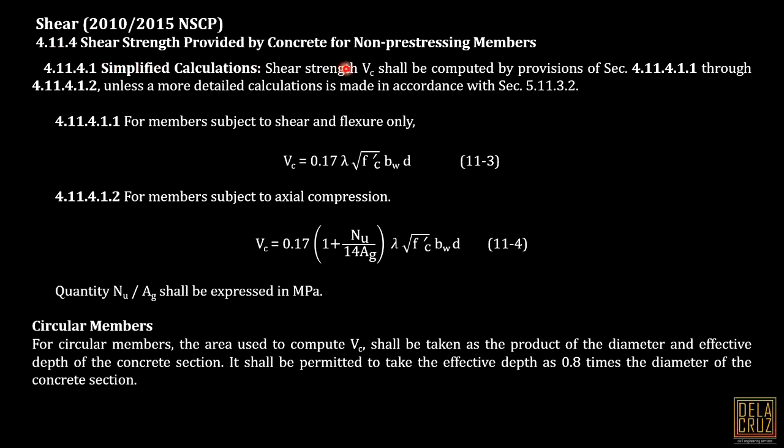Let me show you first the NSCP code provision. We will use the updated code version. This is for shear - the shear strength provided by concrete for non-prestressing members. This is the simplified calculation, the shear strength VC shall be computed by provision of this section unless a more detailed calculation is made.